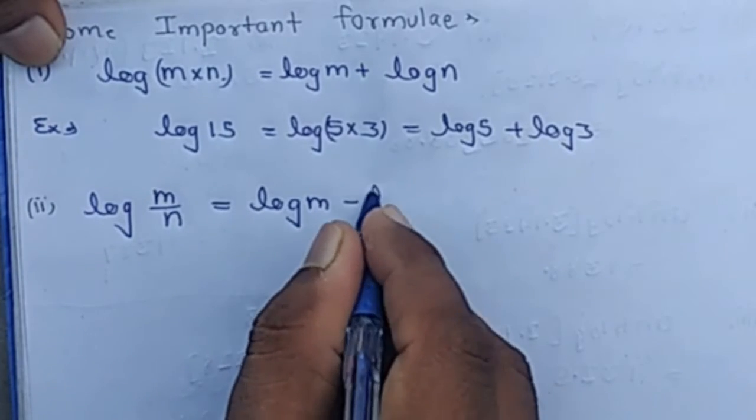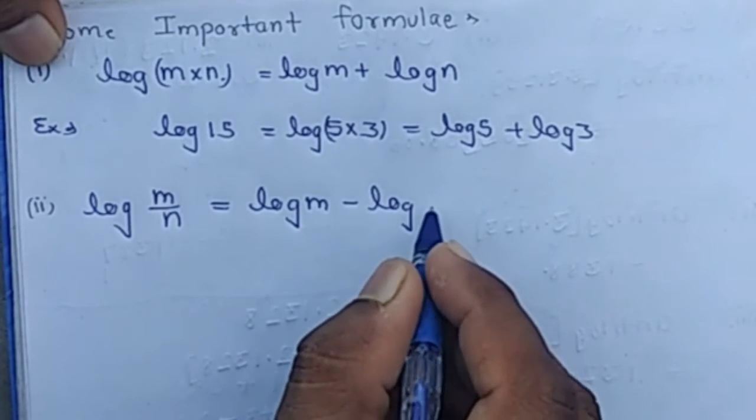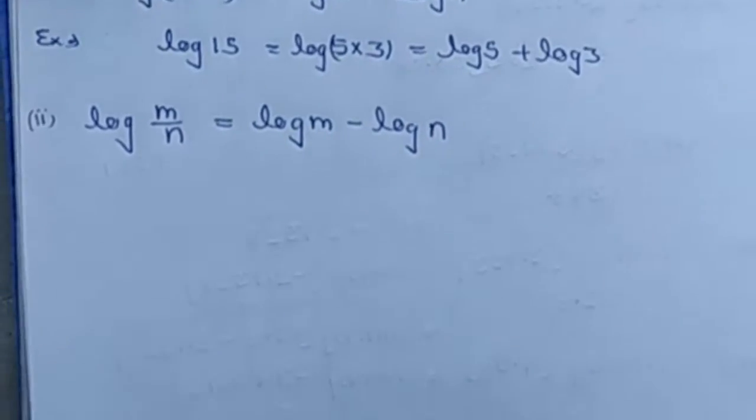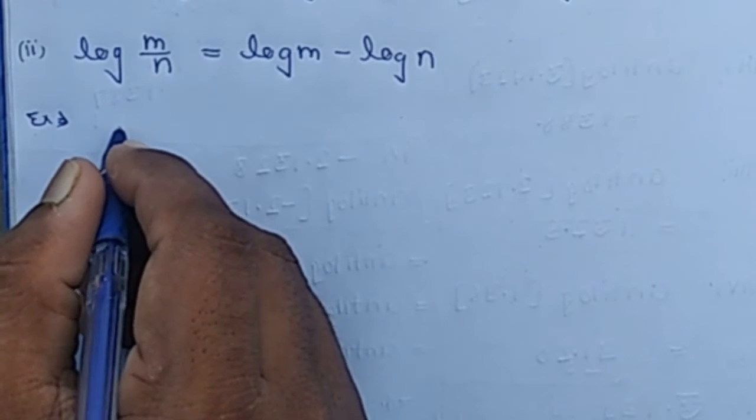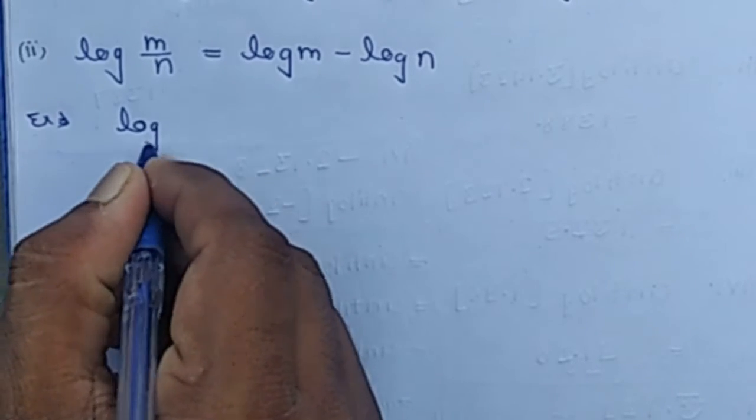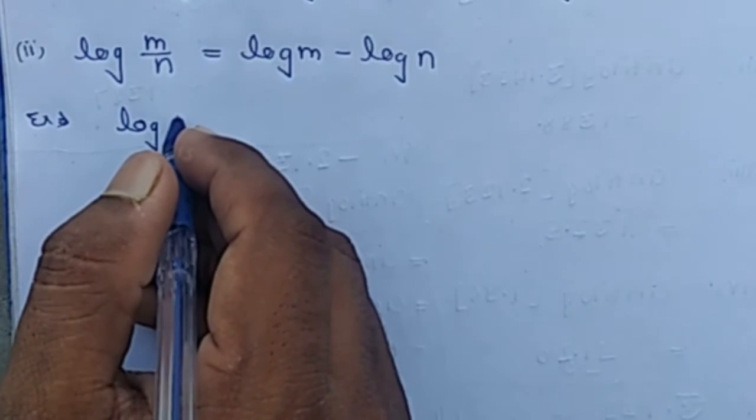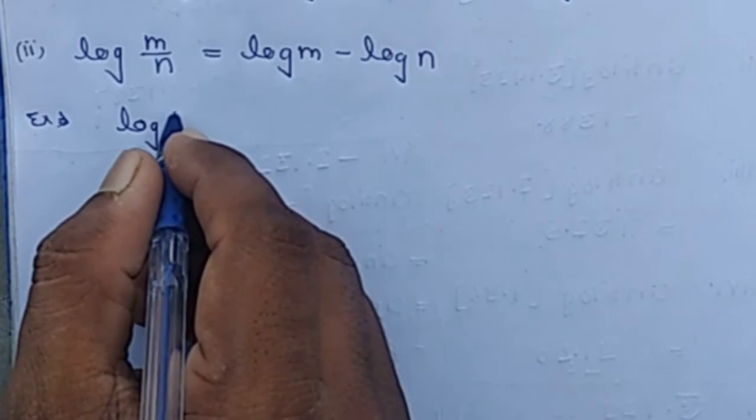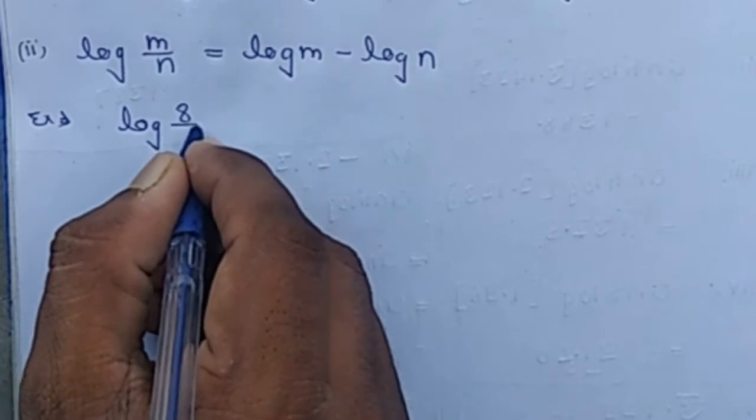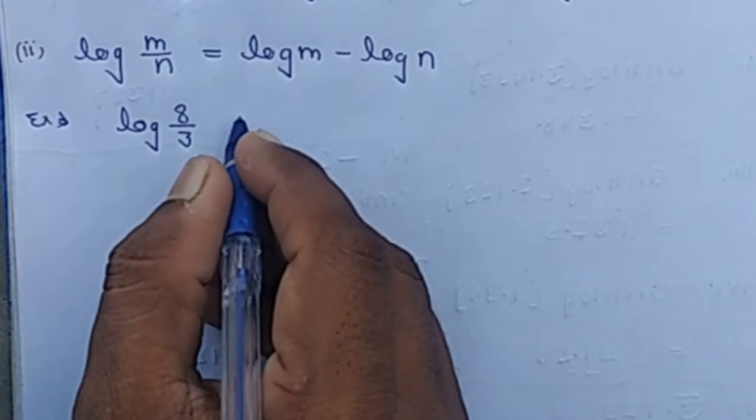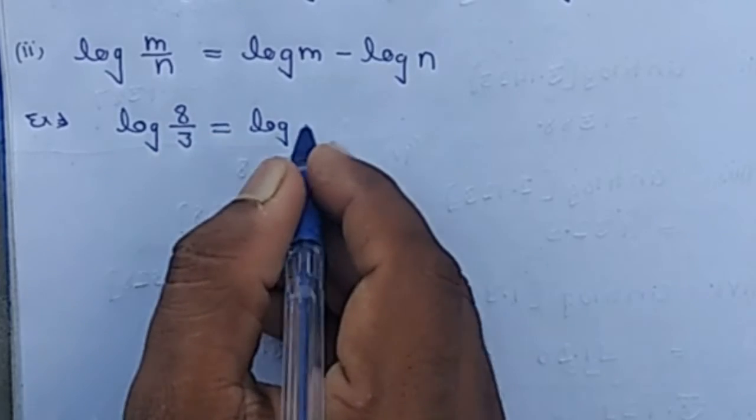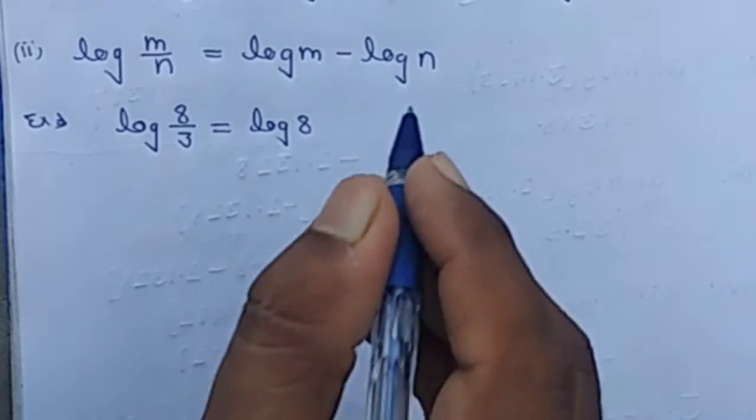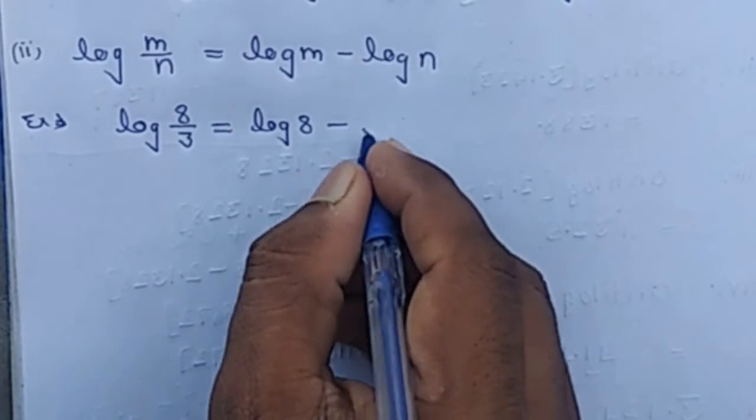...minus log n. For example, suppose we have log(8/3). Then log(8/3) can be written as log m by n, which means log 8 minus log 3.